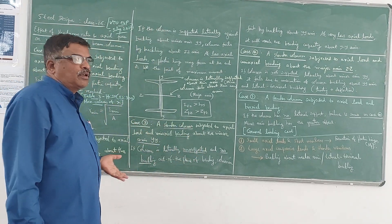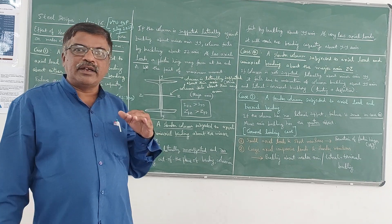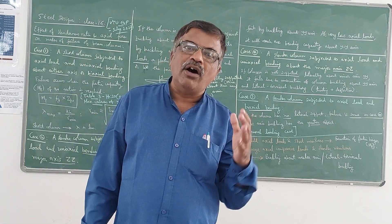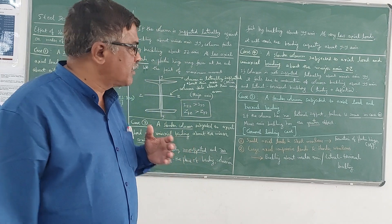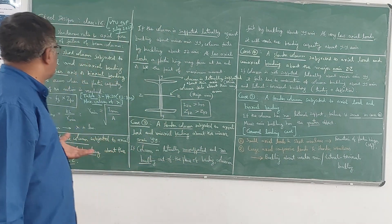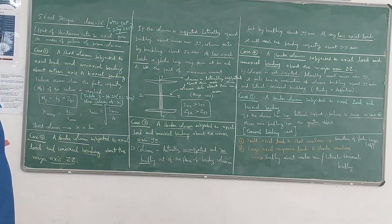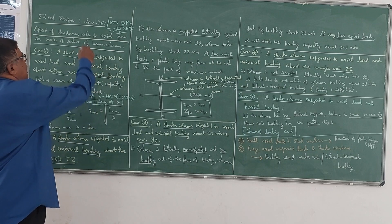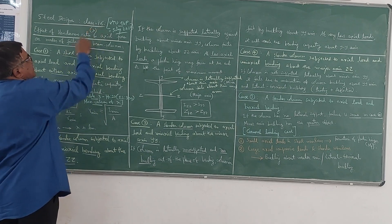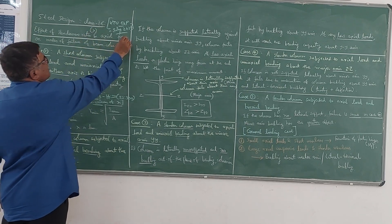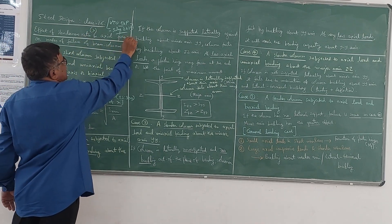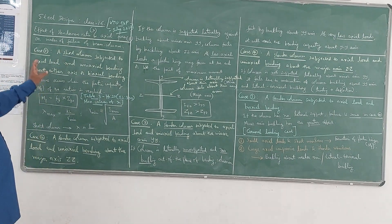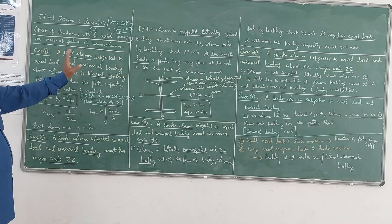Beam columns fail by compression criteria, by bending criteria, or by both. Here we look at the effects of slenderness ratio — that is lambda — and axial load — that is P — which is acting on the beam column, on the modes of failure of beam columns.